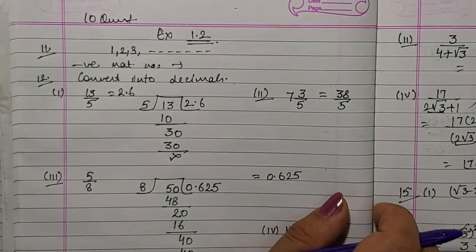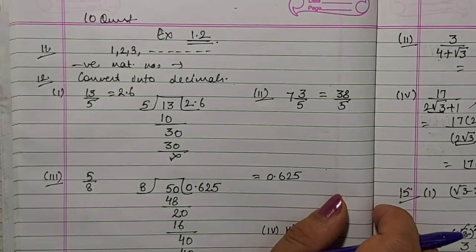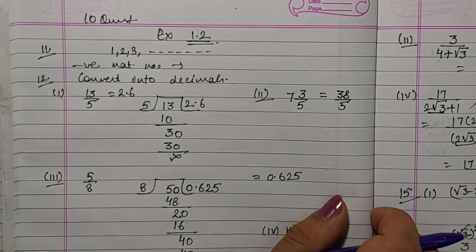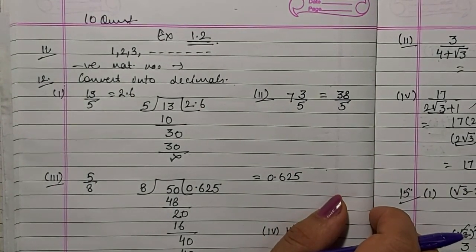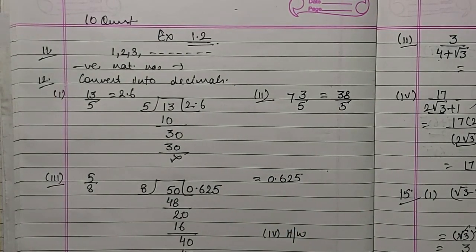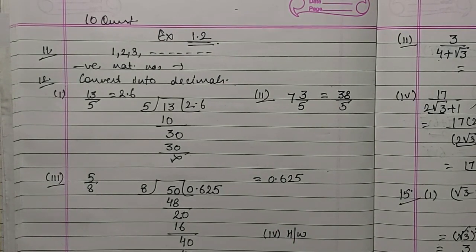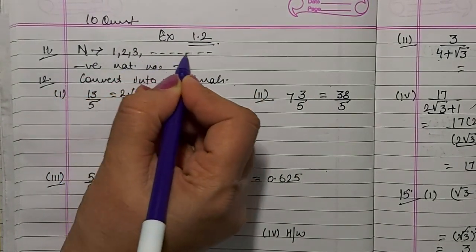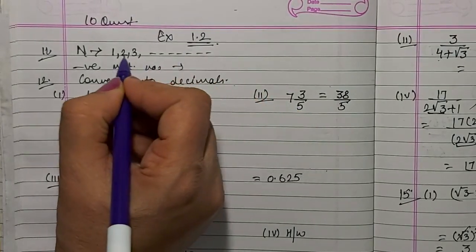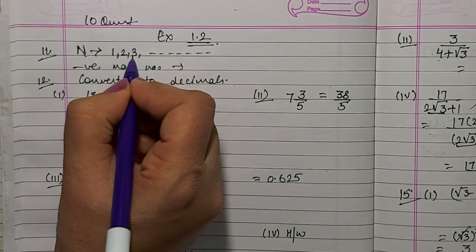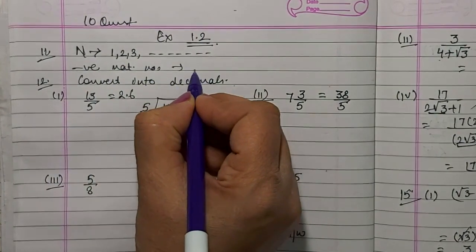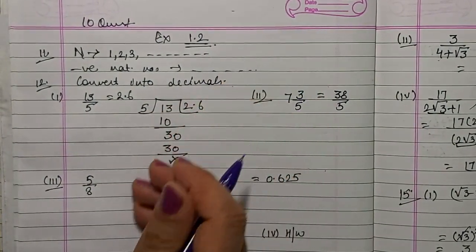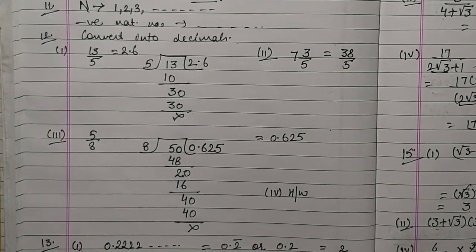Good morning dear students. We are going to continue with the next question of exercise 1.2. Up till 10 questions we have done in our previous lecture. Today we are going to discuss the 11th question: write down negative natural numbers. You know natural numbers start from 1 and go further. You can write down any negative natural number — the answer is not unique.